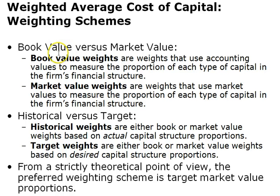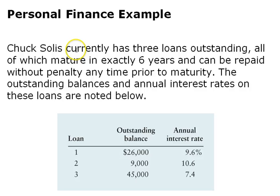Let's look at book value versus market value weights. Book value weights use accounting values to measure the portion of each type of capital in the firm's financial structure, while market value weights use market values. We can also distinguish between historical weights—based on actual capital structure proportions—and target weights, based on desired capital structure proportions. From a strictly theoretical point of view, the preferred weighting scheme is the target market value proportions.